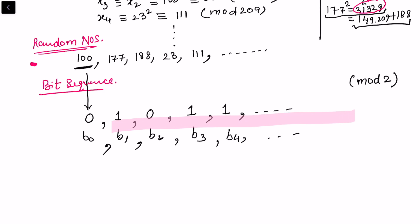way we can get the corresponding bit sequence. And depending upon if you don't want to consider the seed, we will consider this as the random bit sequence, and these as the random numbers.